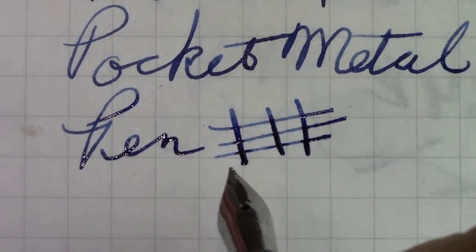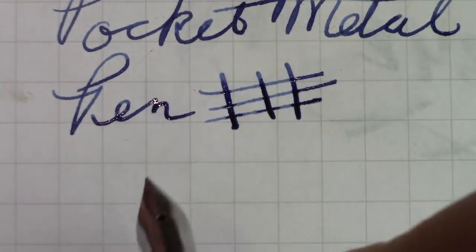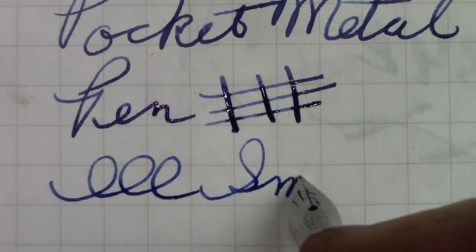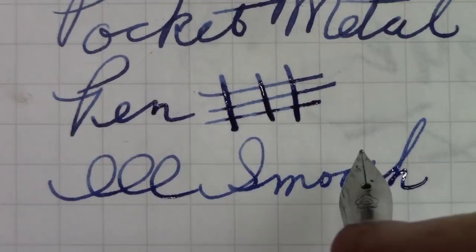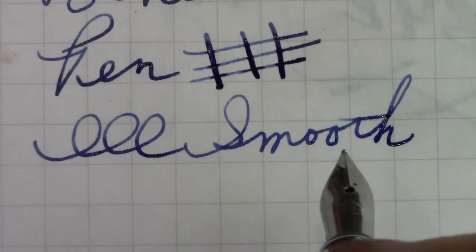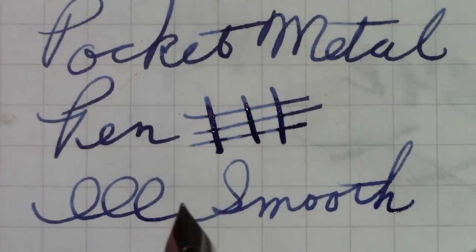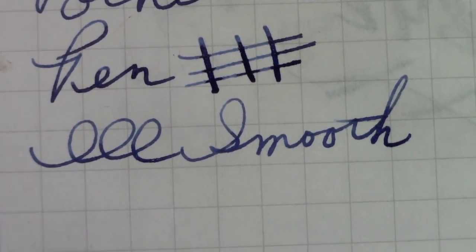I mean this nib is very nice I'm impressed, it's a decent wet rider it's smooth. I mean it really glides across the paper so if just for the nib I would like this pen but the design in the metal doesn't appeal to me.